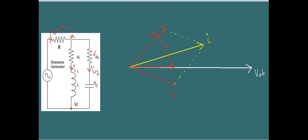In the I1 branch, there are two voltages: VRL and VL. With I1, VRL has no phase difference, so VRL lies in the same line as I1. But VL will be 90 degrees leading I1. This is VL. The vector sum of VRL plus VL is equal to VAB, so that line also lies along VAB.